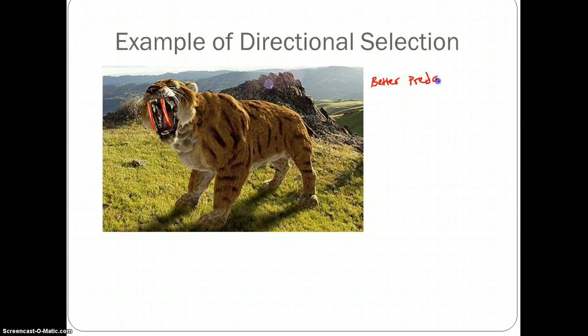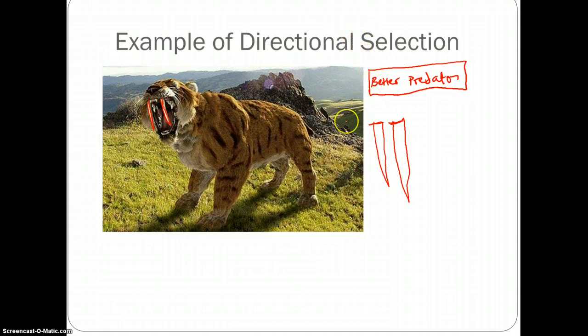So this better predator evolution continued to select for these large teeth. These large teeth continue to get longer and longer in each generation. This is exactly what directional selection means, that this one extreme, these long teeth, were selected for because they increased the chances of survival.